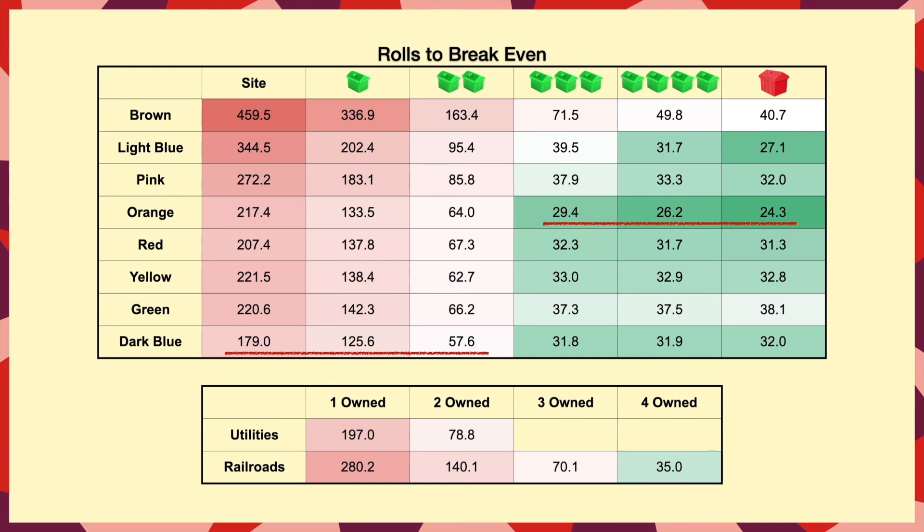Also, there's no need to buy houses for the railroads, but clearly getting the whole set is tricky since there are 4 of them. So, there we have it, orange is the best set to go for.